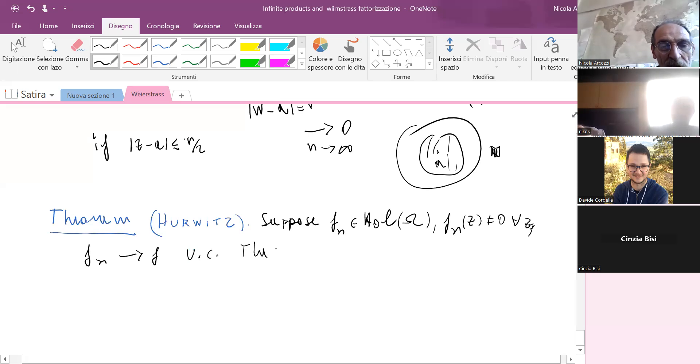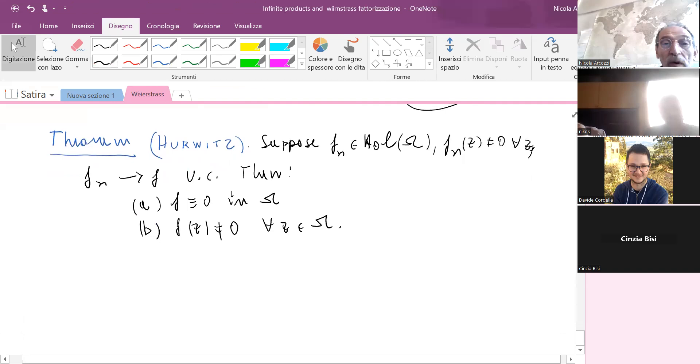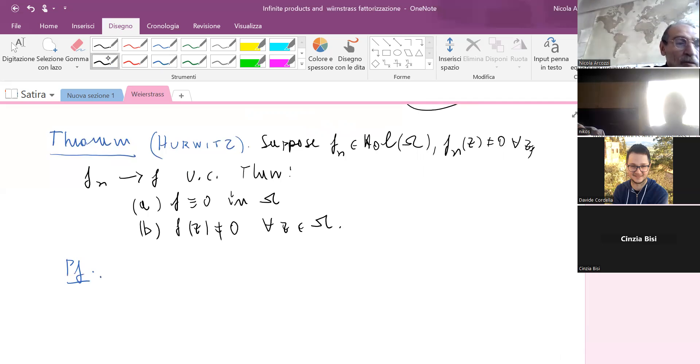Then only two things can happen. The first one is that f is identically zero in omega, and the second is that f is zero-free. Unlike with real functions, we can cook up real functions converging to a function which has maybe some isolated zeros. With holomorphic functions this is not possible. That's the content of Hurwitz's theorem.